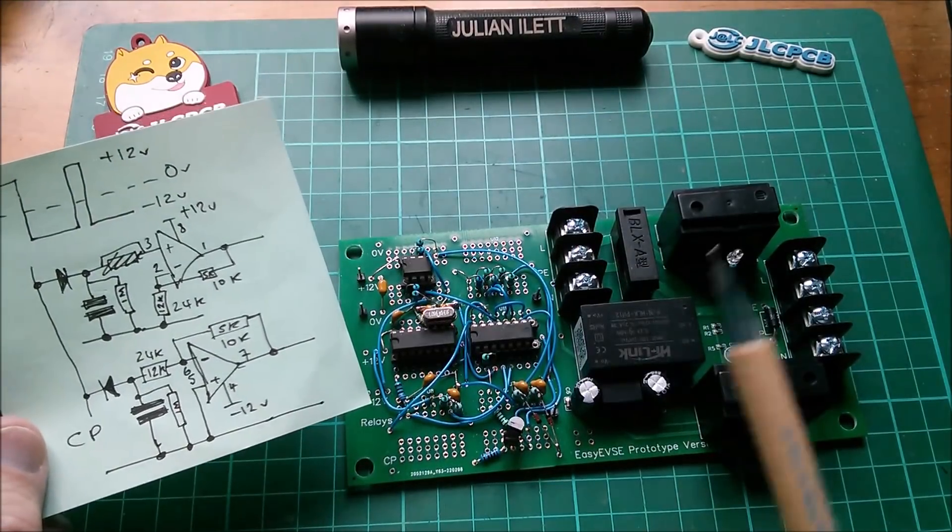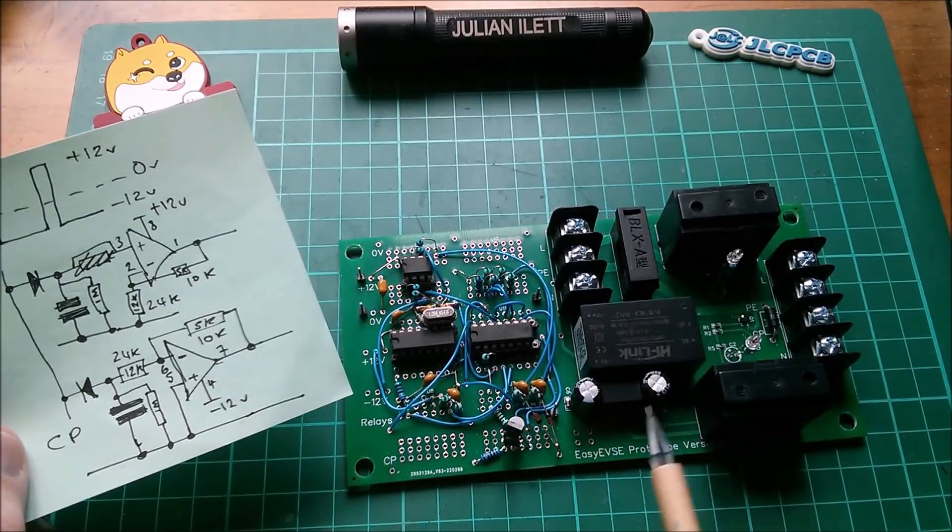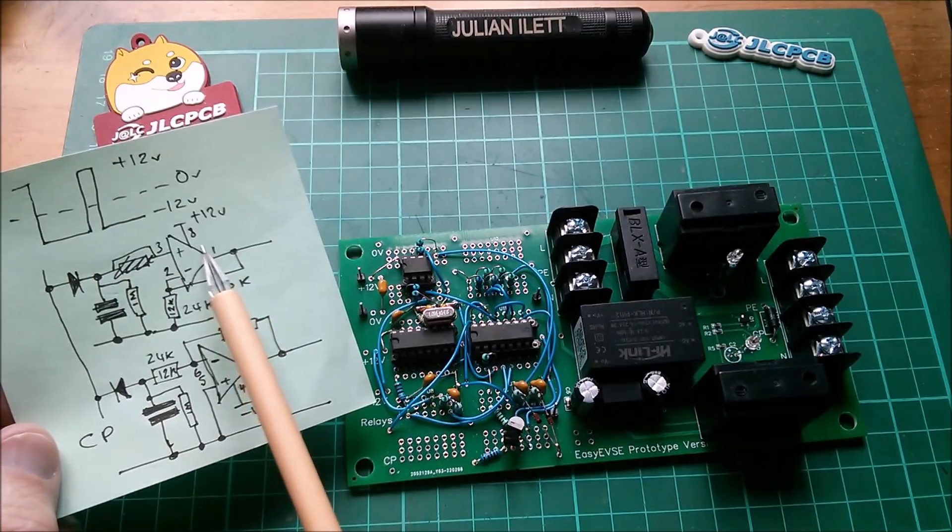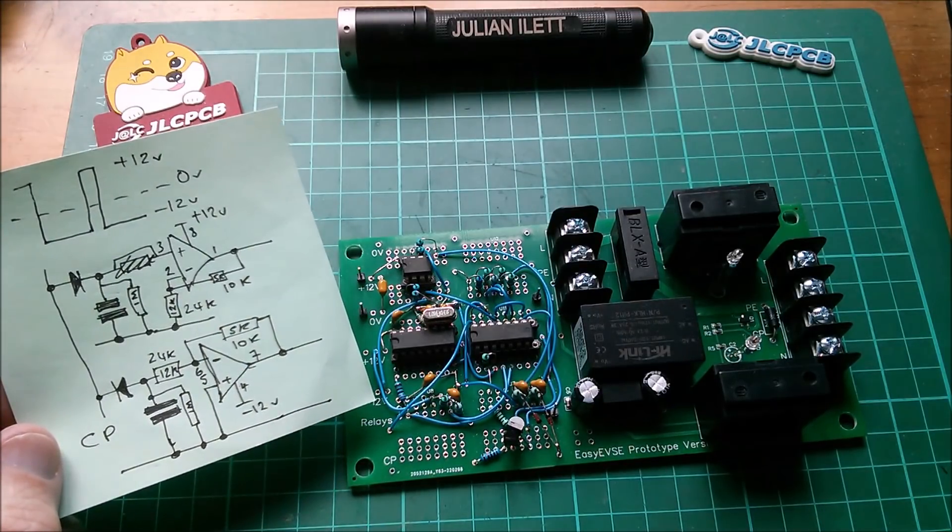Good morning all. I built a dual op-amp circuit on my EVSE prototype board. Here are the two op-amps: a non-inverting and an inverting. There's a problem with the non-inverting.